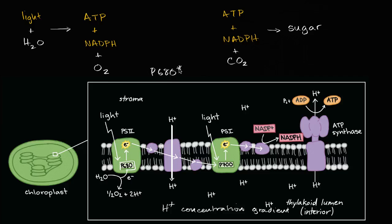That's when it has an excited electron, and then after it gives away its electron, it becomes P680 with a positive charge. And this P680, we could call it P680 plus, or maybe a P680 ion. This is actually a very strong oxidizing agent.